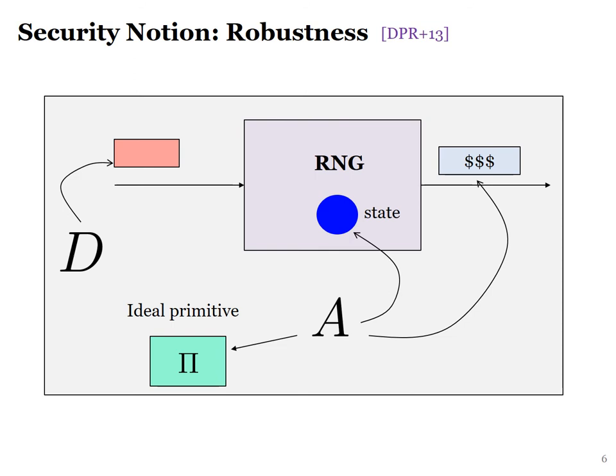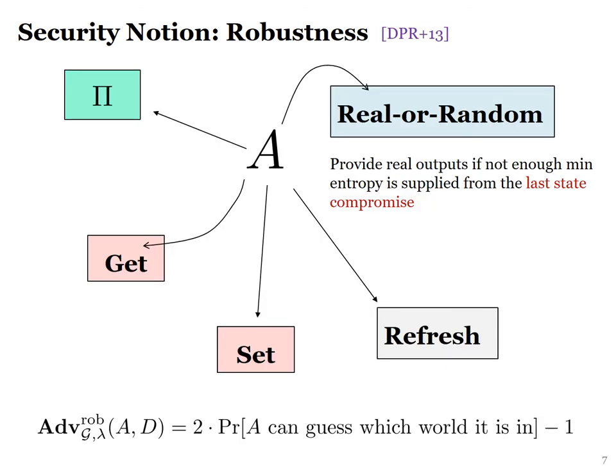In particular, we will consider a pair of adversaries A and D. The sampler D generates the inputs. The adversary A tries to compromise the state and also distinguish the outputs from truly random strings. If the RNG is based on an ideal primitive pi, we give A oracle access to pi. The sampler D, however, doesn't have access to pi. In other words, the RNG has a huge seed, namely the encoding of the ideal primitive pi. In addition to pi, the adversary is also given other oracles — for example, it can get the state of the RNG, or set the state of the RNG, or force the RNG to refresh the state.